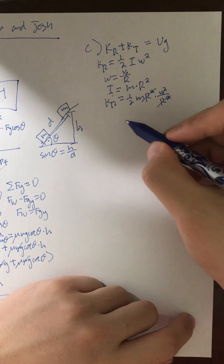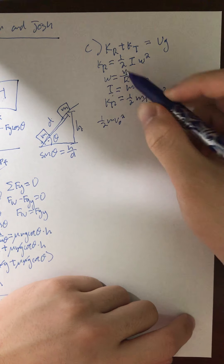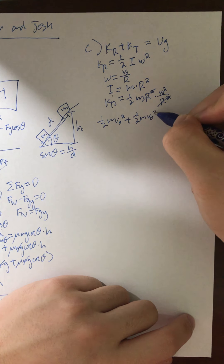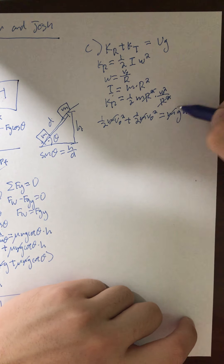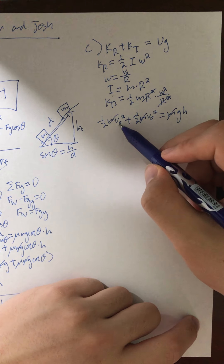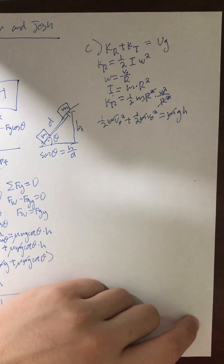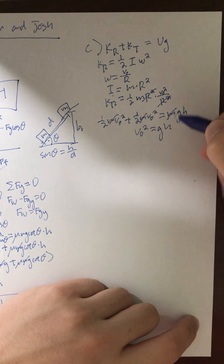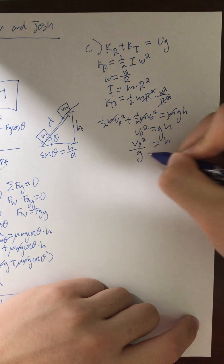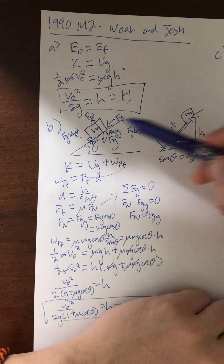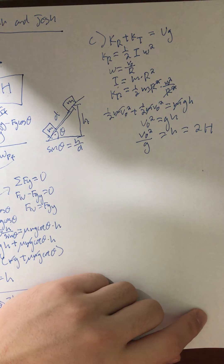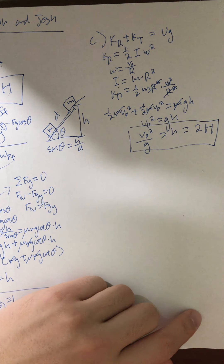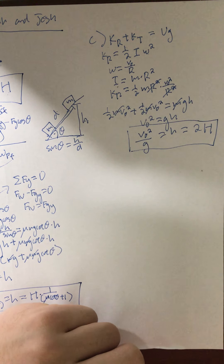Going back to the equation: one-half M v-initial squared for rotational plus one-half M v-initial squared for translational equals UG, which is MgH. Canceling the M's from both sides, the two halves add together to give v-initial squared equals gH. Isolating H gives v-initial squared over g. Since capital H equals v-initial squared over 2g, this is exactly twice that value — so the maximum height equals 2H.